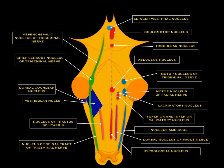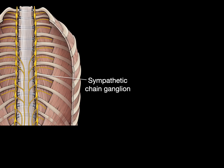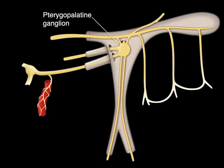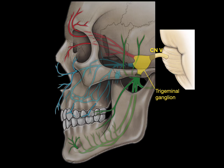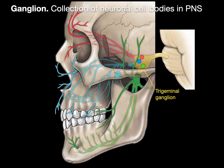Here's a brainstem showing many nuclei: the trochlear nucleus, dorsal cochlear nucleus, motor nucleus of the facial nerve, and nucleus of the spinal tract of the trigeminal nerve. A nucleus is a collection of neuronal cell bodies in the central nervous system. A ganglion, by contrast, is a collection of cell bodies in the peripheral nervous system. Examples include the dorsal root ganglion with sensory neuron cell bodies, the sympathetic chain ganglion with postganglionic sympathetic neurons, the pterygopalatine ganglion with postganglionic parasympathetic neurons innervating the lacrimal gland and nasal glands, and the trigeminal ganglion with cell bodies from skin of the forehead, upper lip, and lower jaw.